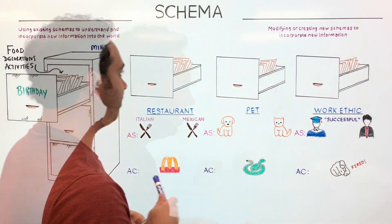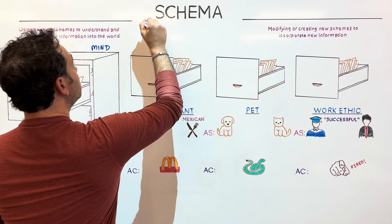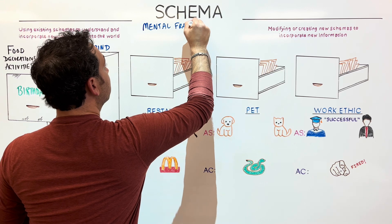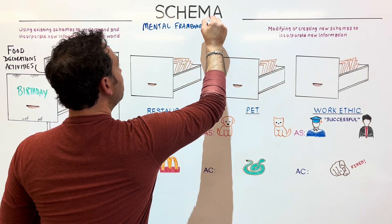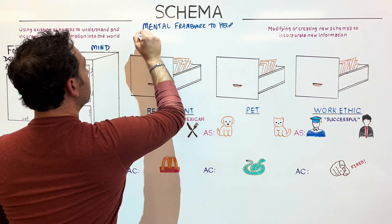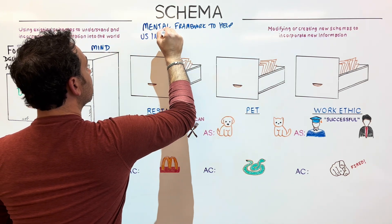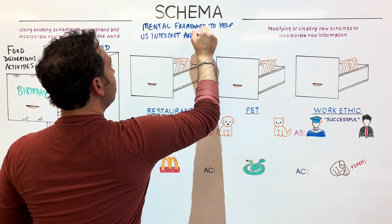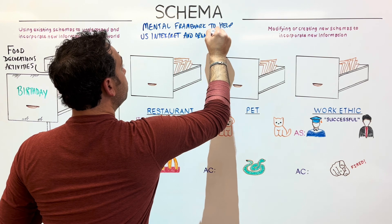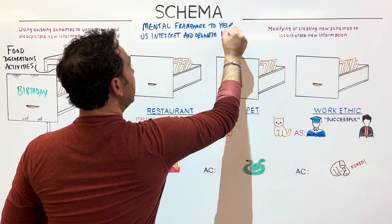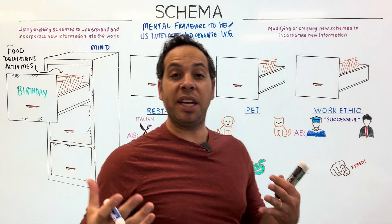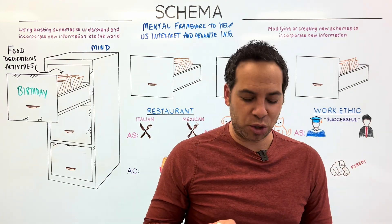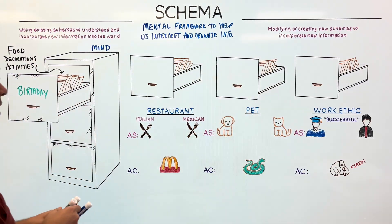And this is what we call a schema. It is a mental structure, or mental framework, that helps us interpret and organize information. So when we go to a new place or experience new things, we're not going to it blind — we're bringing with it this mental framework that helps us anticipate what's going to happen. And schemas come in all forms, shapes, and sizes.